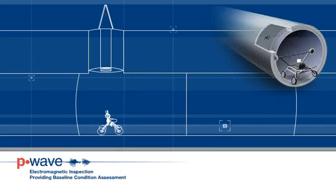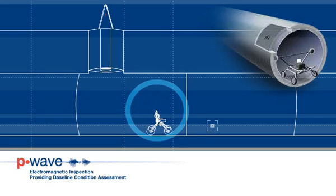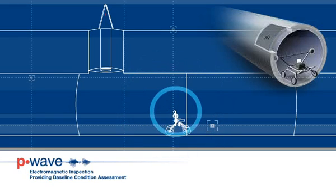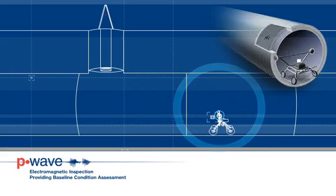P-Wave generates an electromagnetic field inside a PCCP and measures the changes within this field caused by broken wires. Owners are then provided with a comprehensive report.